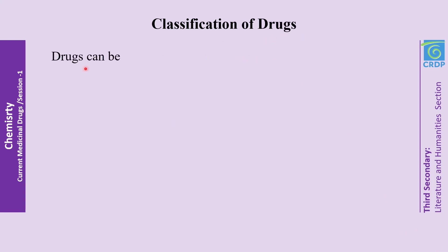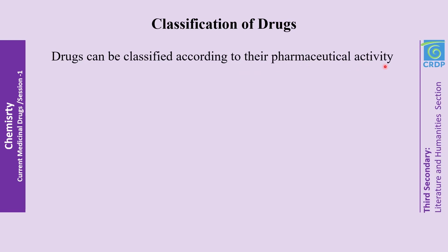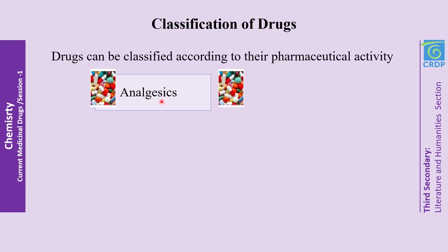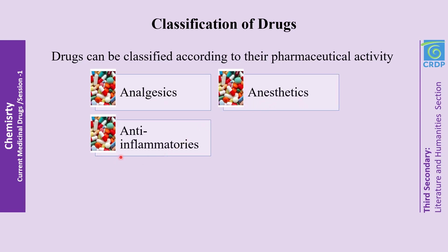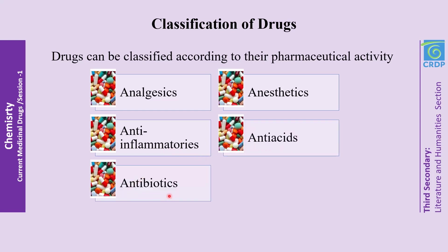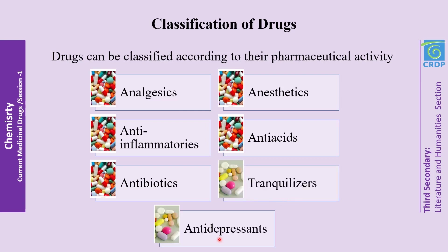Drugs can be classified according to their pharmaceutical activity. They could come in the form of analgesics, anesthetics, anti-inflammatories, antacids, antibiotics, tranquilizers, and antidepressants.